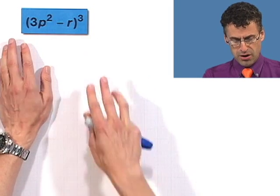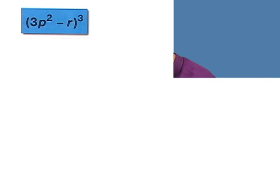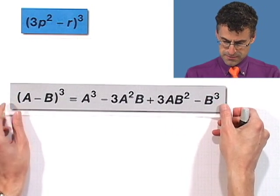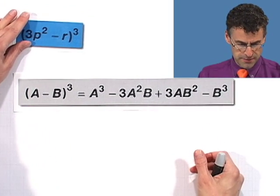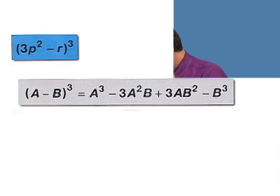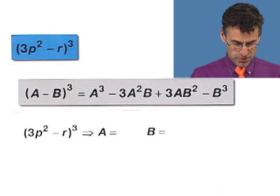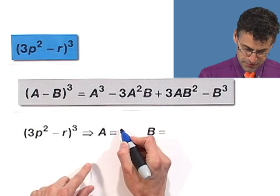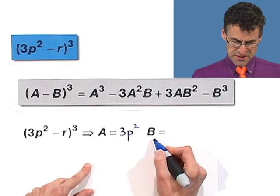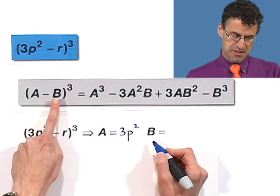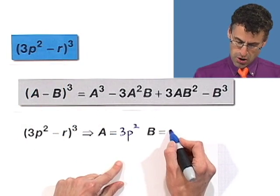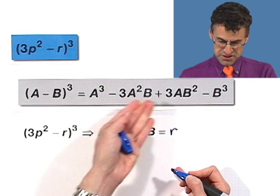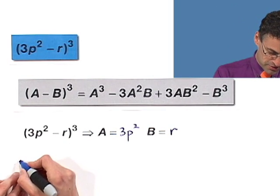Let's try one more. Take 3p squared minus r and cube it. Notice the negative sign. If you want to use the formula, go through your arsenal of fun facts. We'll apply the a minus b cubed formula. We have to identify the a and b. The a in this case is 3p squared, that whole monomial. The b is r.